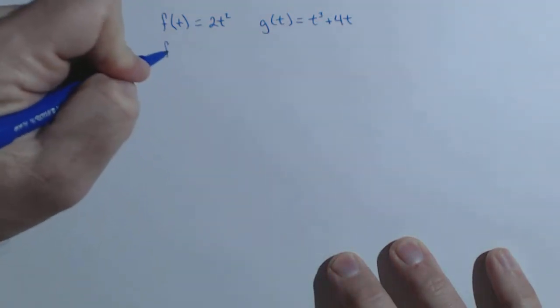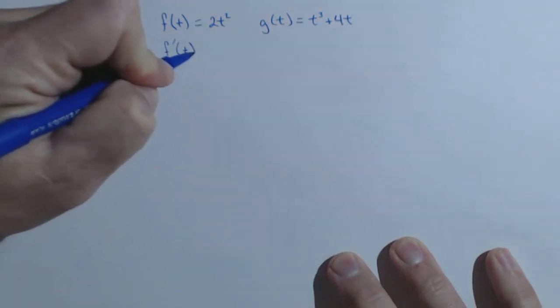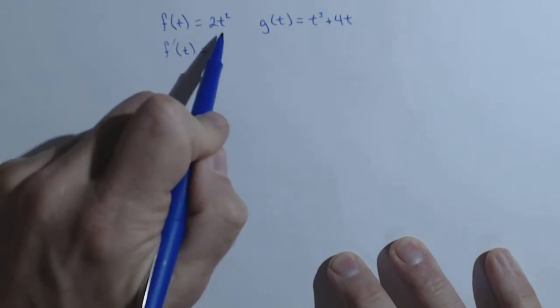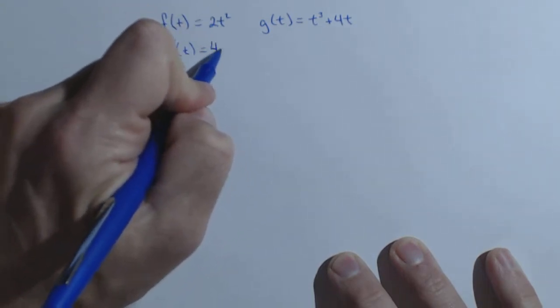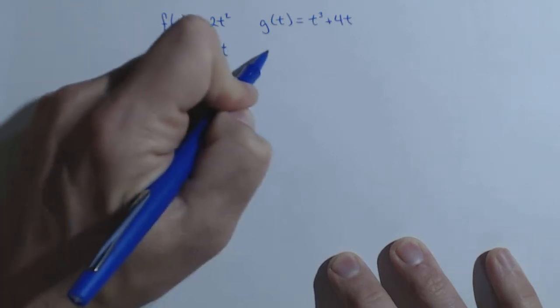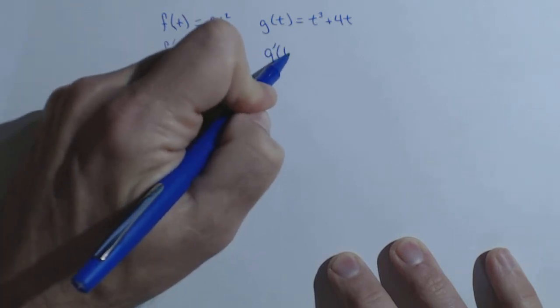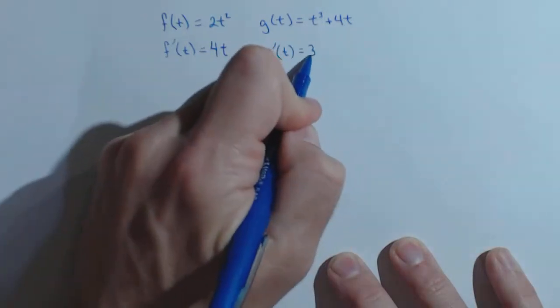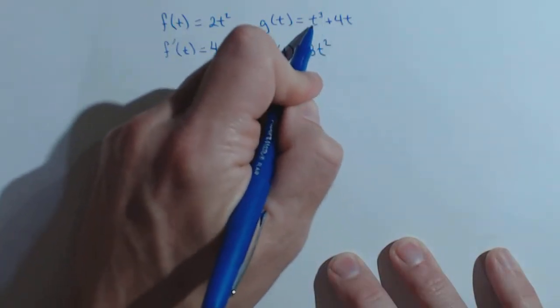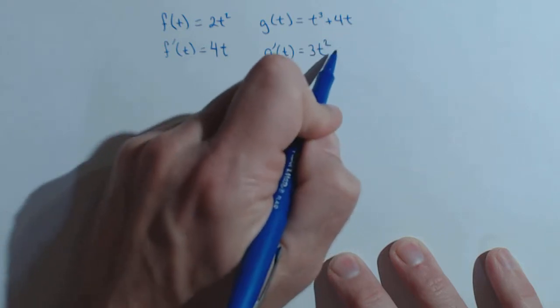So first thing we're going to do is we're going to find the derivative of each of these. So we just have a power rule, so drop the power down, decrease it by one, so the derivative of 2t squared is 4t. And for g prime of t, our derivative is 3t squared plus 4.